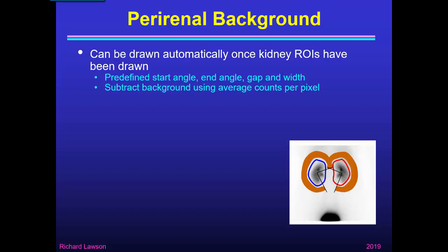If we're looking at perirenal background, it can be drawn automatically by the computer system once the kidney regions have been drawn. All you need is a predefined start angle and end angle to miss out the medial bit where the ureter emerges, and to specify the gap from the kidney to the background and the width of the background. The computer will then draw these C-shaped regions about the left and right kidney automatically.